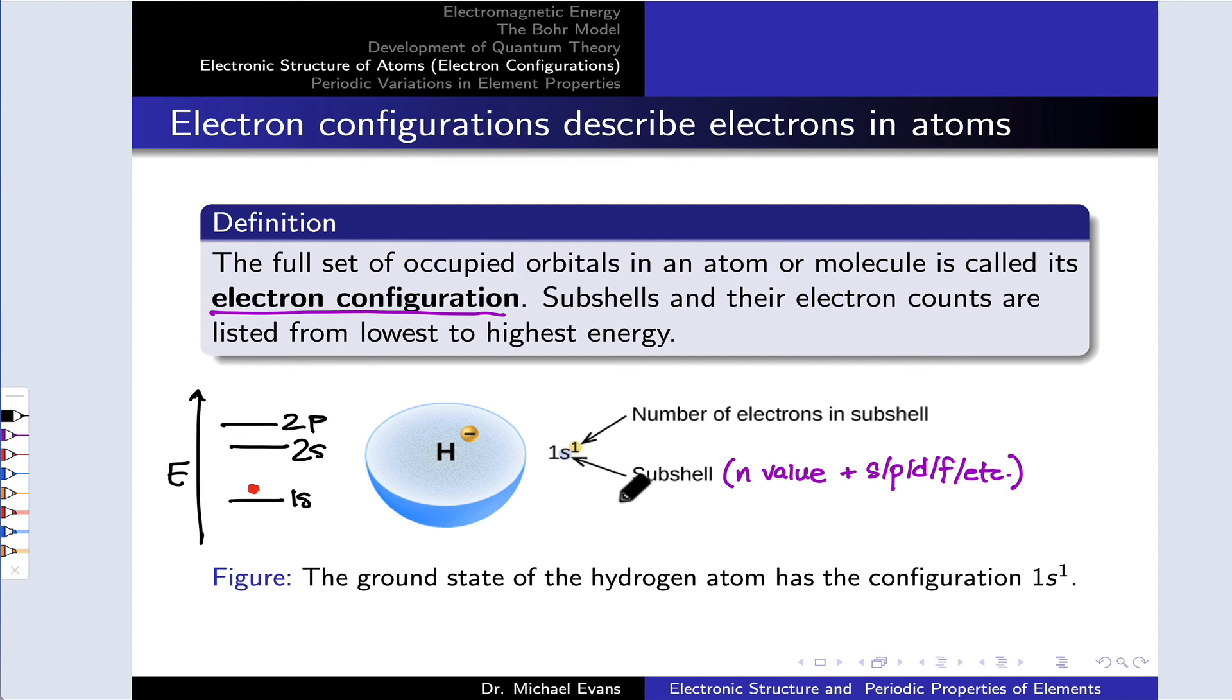So for example, for the hydrogen atom in its ground state, there is one electron occupying the lowest energy, one S orbital. And we can list it right here as a dot or sometimes as an up or down arrow to indicate spin.